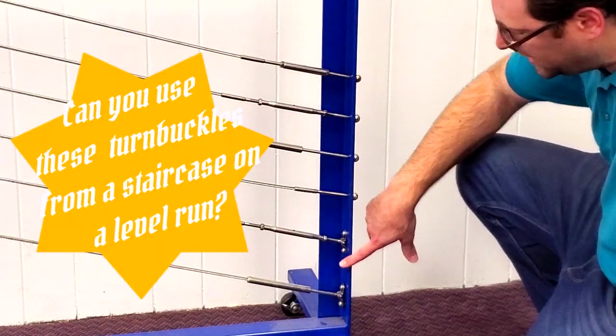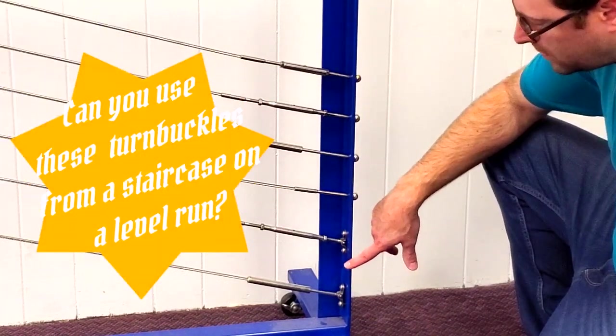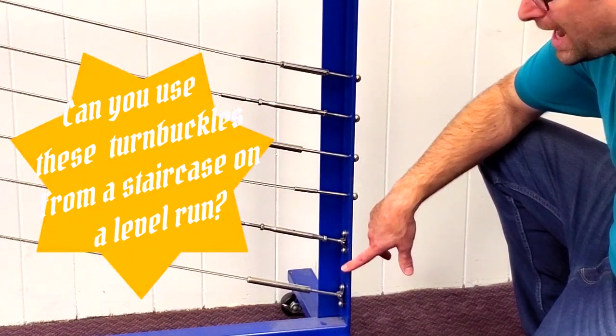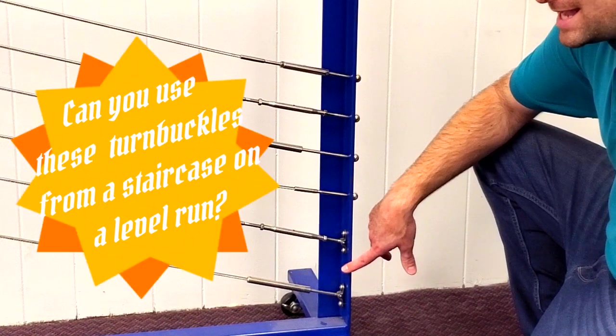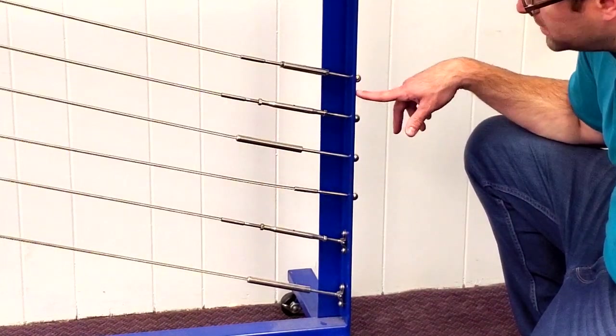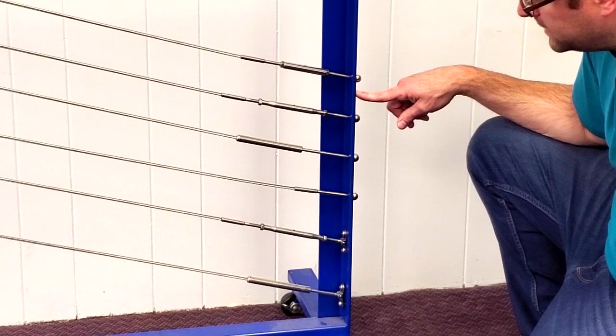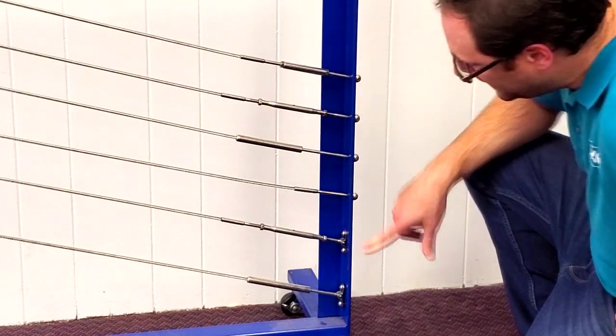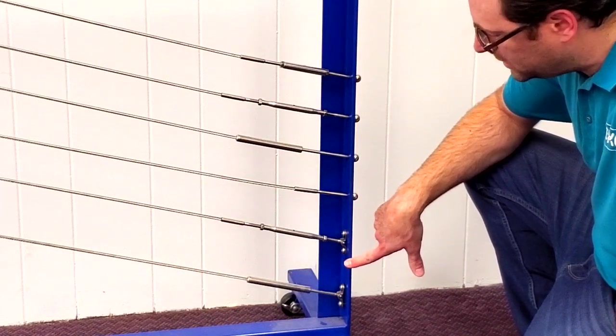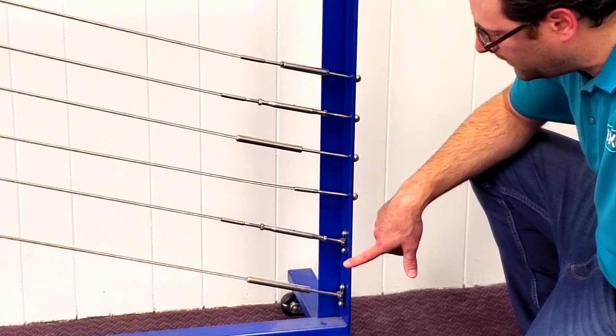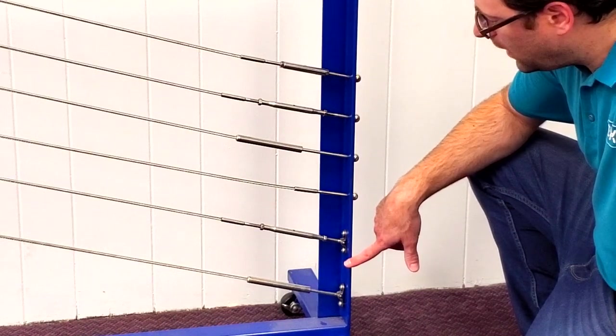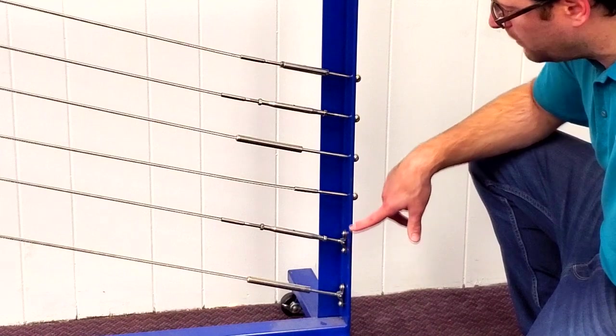One question is, can you use these turnbuckles from a staircase also on a level run? And the answer is, hell yes, you can. This ball works just as good on level runs as it does on the staircase. Same thing with this deck toggle. It will articulate to a level position. And that is an example of some staircase turnbuckles.